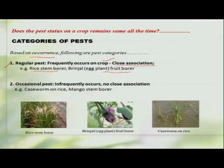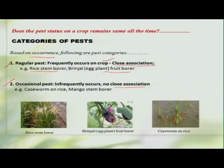Some pests can be called occasional pests, where their occurrence is not quite frequent and they do not have a closer association. For example, the rice case worm. This means you may not expect this pest to occur whenever the crop is grown, but at the same time, they may suddenly appear and cause economic damage.